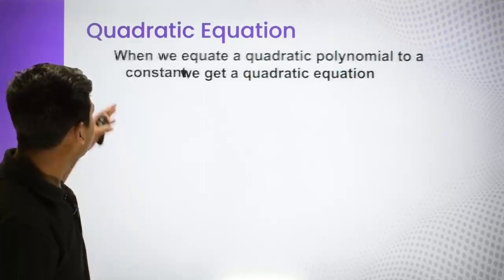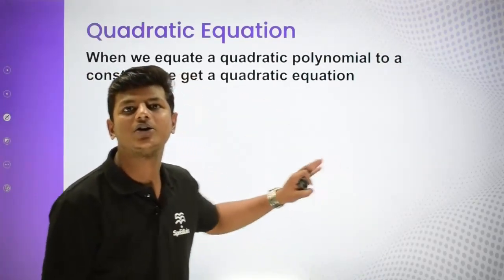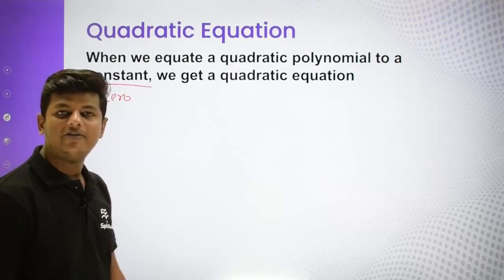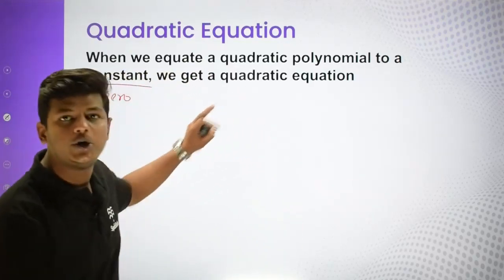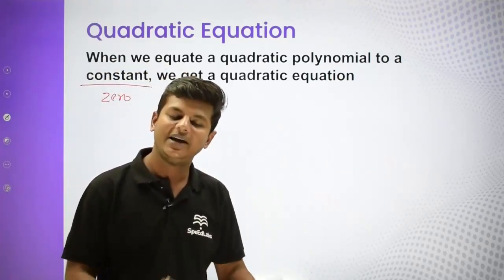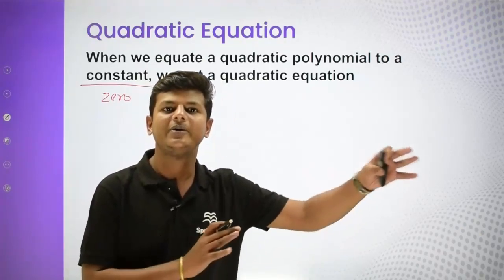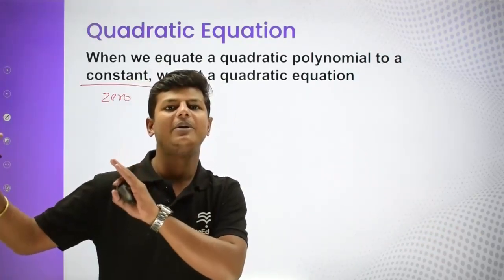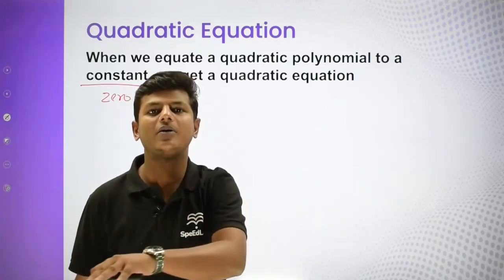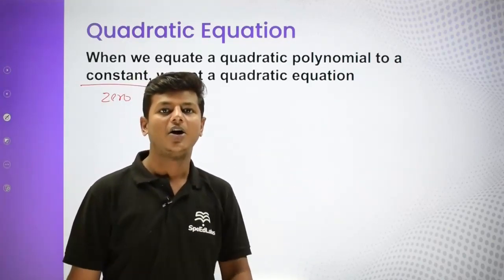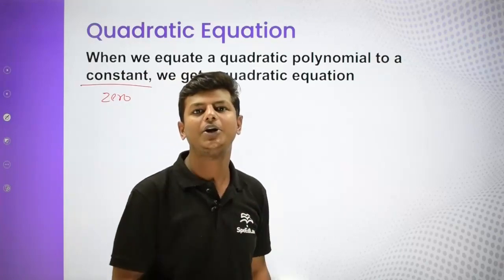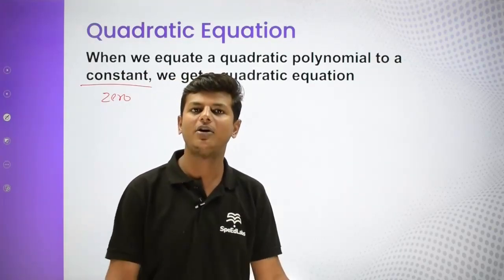Now we move to quadratic equations. When we equate a quadratic polynomial to a constant — you can write zero or say constant — we get a quadratic equation. So when we equate a quadratic polynomial to zero or a constant, it is converted into a quadratic equation. The degrees descend: x squared, then x to the power 1, then x to the power 0.